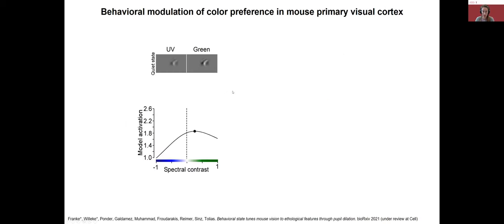To more closely link retinal output to behavior, we are studying how the brain processes the complex retinal message to drive behavior. In collaboration with the labs of Andreas Tolias and Fabian Sinz, we use a modified modeling approach: we record neural activity in mouse primary visual cortex while mice are head-fixed on a treadmill viewing colored natural scenes, then train an artificial neural network to identify each neuron's optimal stimulus. This approach incorporates behavioral parameters like pupil size and running speed. We found that color preference actually changes with behavioral state: a neuron showing strongest response to green-biased stimuli in a quiet state changed its preference significantly when the mouse started to run.